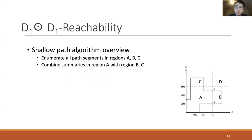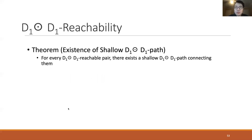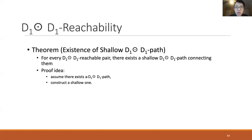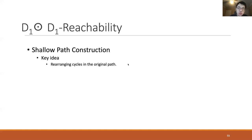This concludes all steps in the shallow path algorithm. The whole algorithm has polynomial time complexity. It remains to show that shallow D1D1 paths always exist between two D1D1 reachable nodes. Our proof is by construction: given any D1D1 reachable path, we construct a shallow D1D1 path connecting the same pair of nodes.